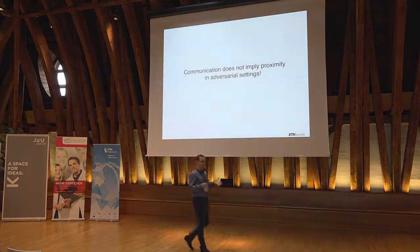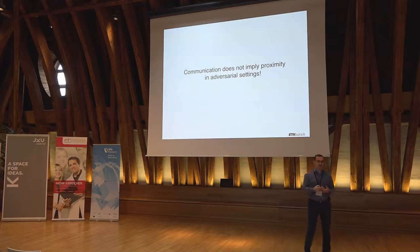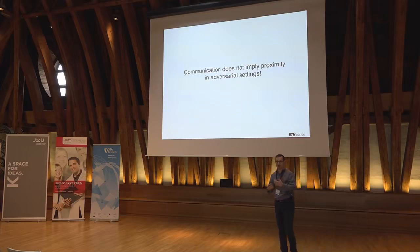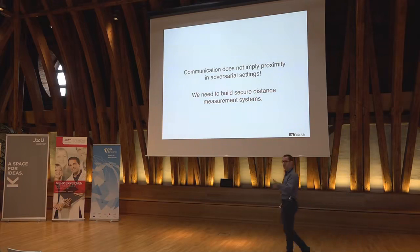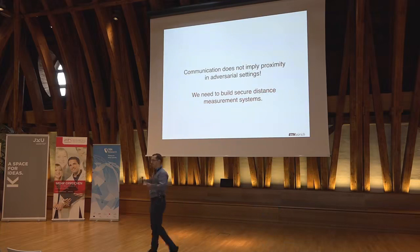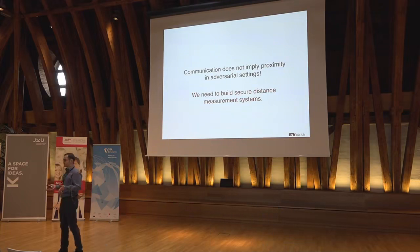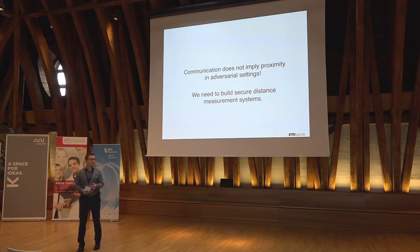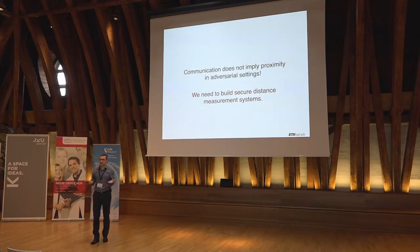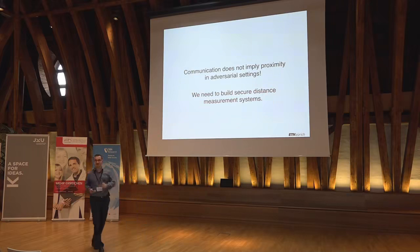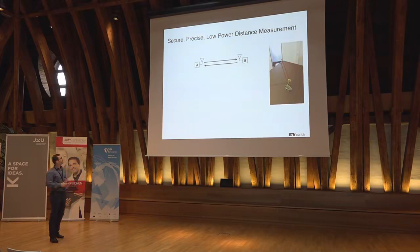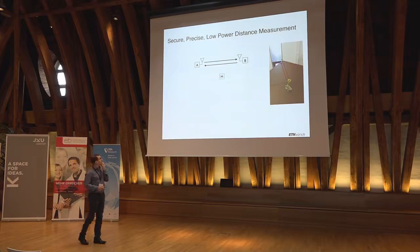The key message is: communication does not imply proximity in adversarial settings. I've been pounding on this ever since. We need to actually build a secure distance measurement system — to securely determine the distance between two devices, or securely detect proximity. It doesn't have to be a precise distance, but we need to know: am I actually within two meters as opposed to hundreds of meters away?